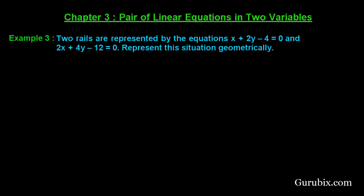Welcome friends, let us solve example number 3 of chapter 3. The example is as follows: two rails are represented by the equations x plus 2y minus 4 equals to 0 and 2x plus 4y minus 12 equals to 0. We need to represent this situation algebraically. Let us solve the example.